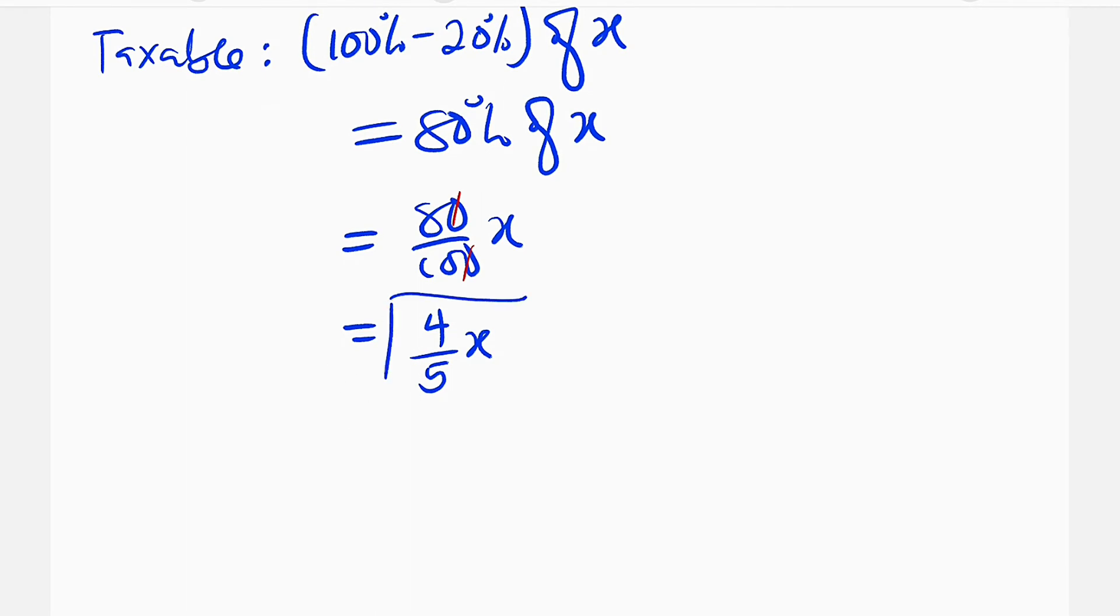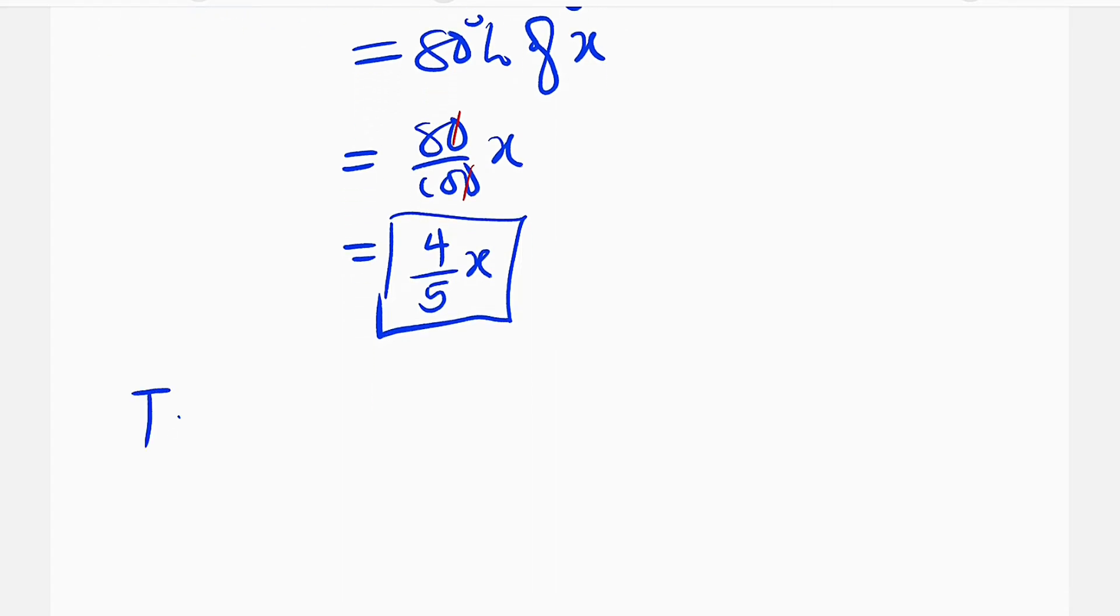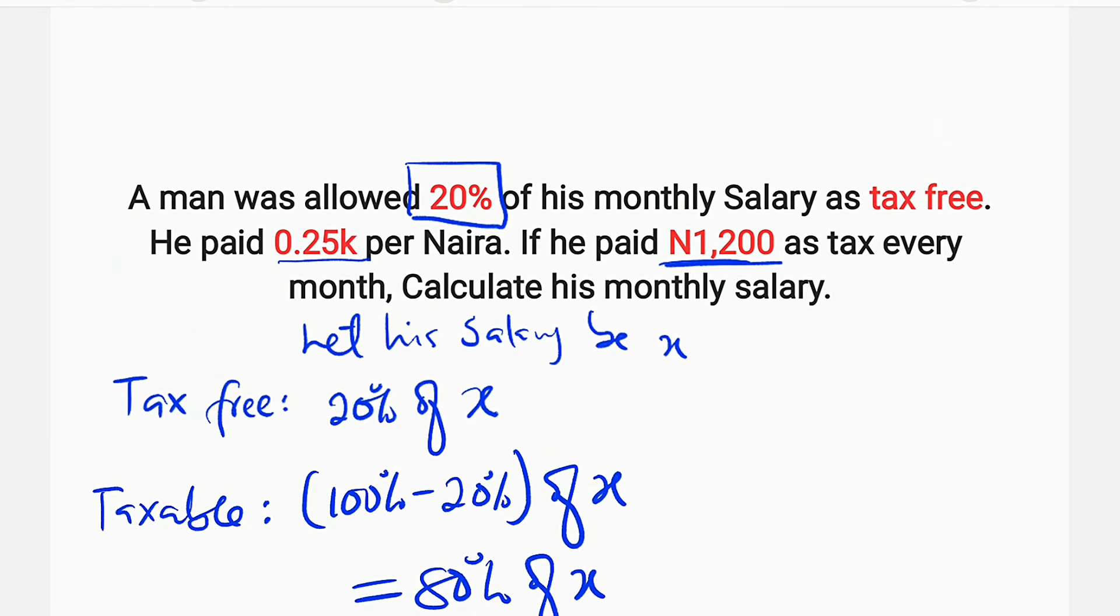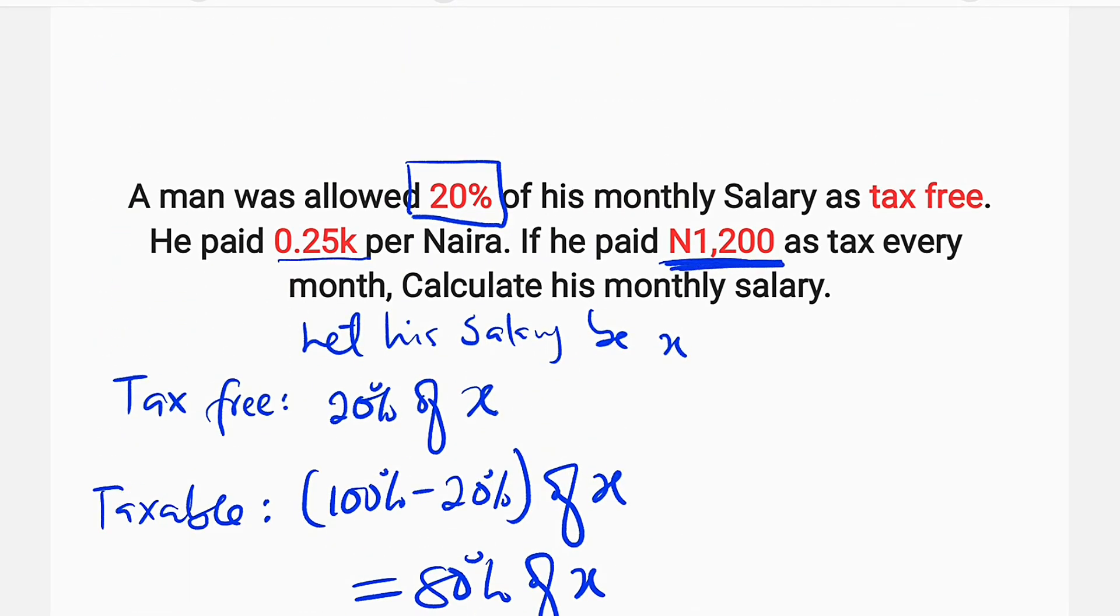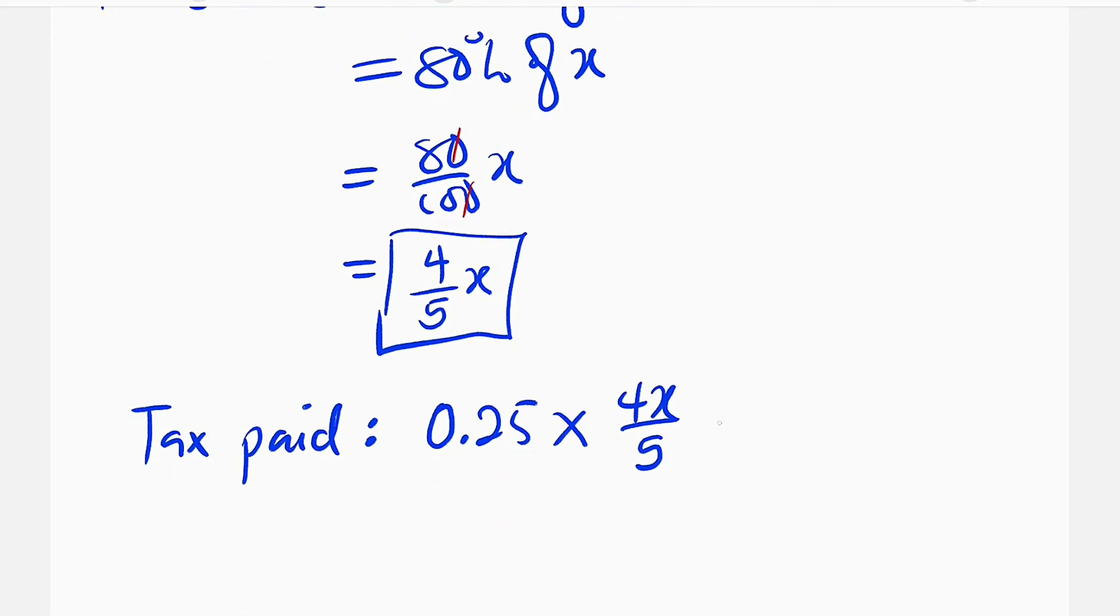So this is the total amount left. So per every one naira, he used to pay 25 kobo. So tax paid will be 0.25 multiplied by this amount, which is 4X divided by 5. And it must be equivalent to this amount, 1,200 naira, because that is what he used to pay every month. This is 1,200.